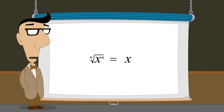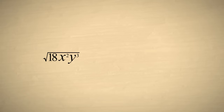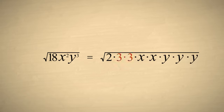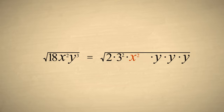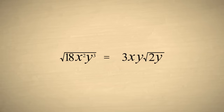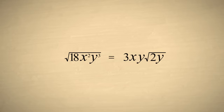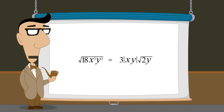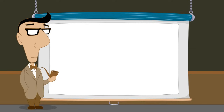Now that we know how to simplify roots of variables, let's use this technique to simplify radical expressions with numbers and variables. Factoring the number under the square root sign, we can collect groups of factors which can be written as perfect squares, and bring the square roots out from under the radical sign. Since a square root is an even root, don't forget to take the absolute value of the variables x and y.